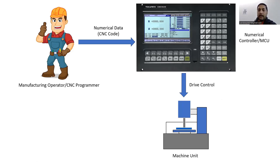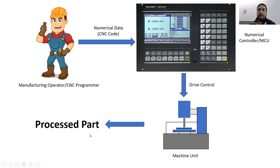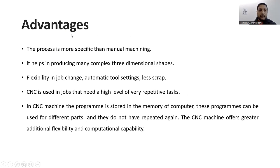Finally, we get our processed part. That is a simplistic but accurate view of how a typical CNC machine tool works. Now let us look at the advantages of CNC machines.